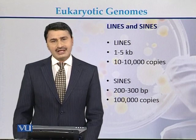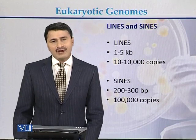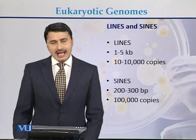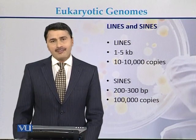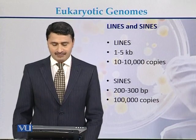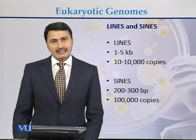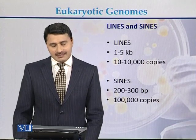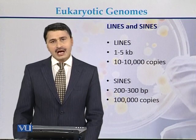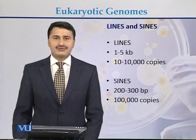If we try to differentiate between LINEs and SINEs: LINEs are 1 to 5 kb in length and their copy number can range from 10 up to 10,000. While in case of SINEs, the size can be 200 to 300 base pairs and their copy number can be up to 100,000.